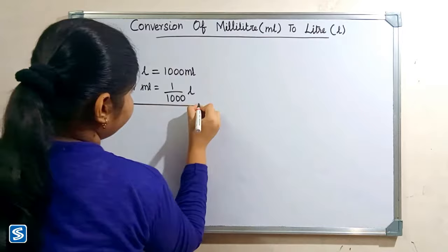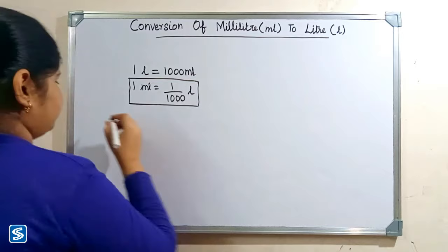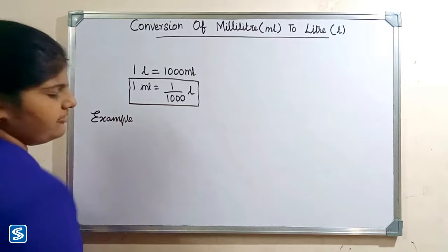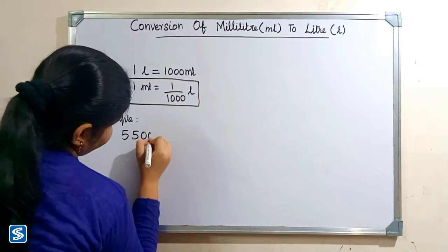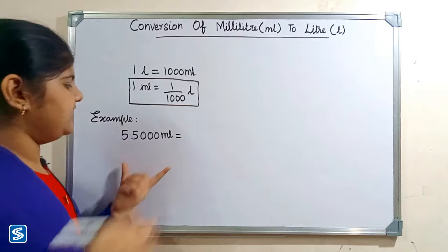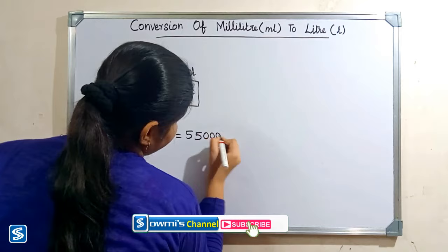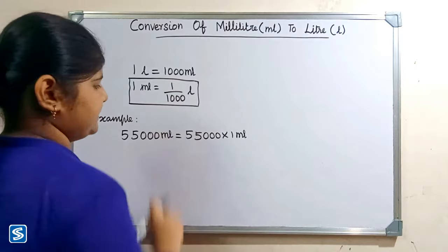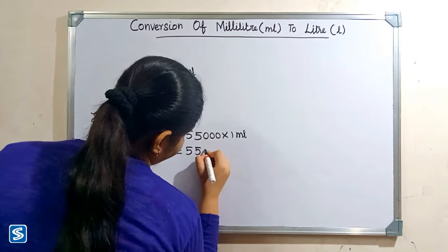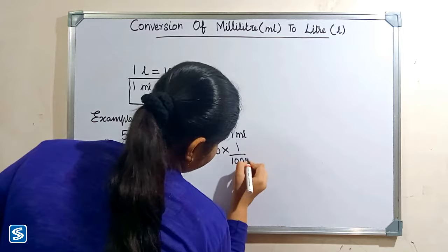Now we will take some examples. For example, we can take fifty-five thousand milliliters. Fifty-five thousand milliliters can be written as fifty-five thousand multiply one milliliter. Now we have to substitute one by one thousand liters in the place of one milliliter, so fifty-five thousand multiply one by one thousand liters.